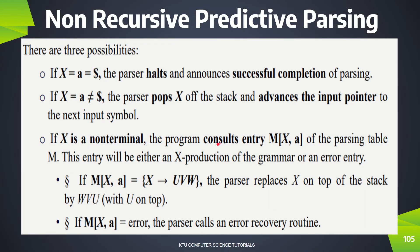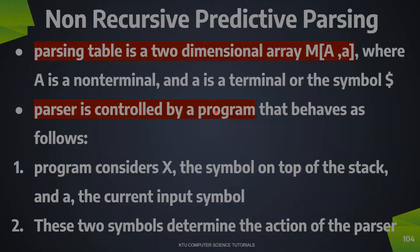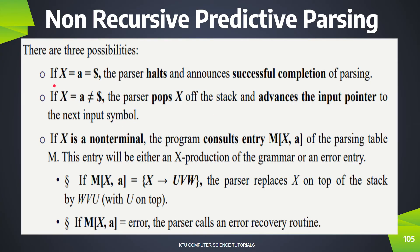There are three possibilities. If we have two components, we need to see the stack top symbol and the input buffer. In the first case, if x is equal to a and equal to $, we check the stack top symbol. If the value of both the stack top and the input buffer are equal to $, that means the parser is halted and it announces the successful completion of parsing.